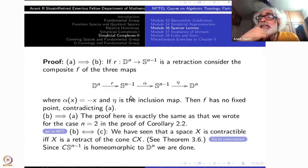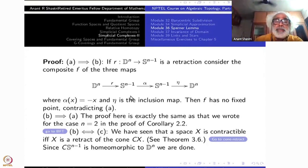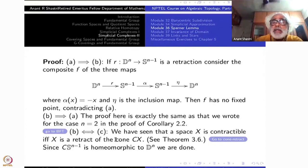Now B implies A: the proof is exactly the same as for n=2. Given a map with no fixed point, draw the line joining x and f(x), extend it toward f(x) to get a point g(x) on the boundary — that gives a retraction, contradicting B.